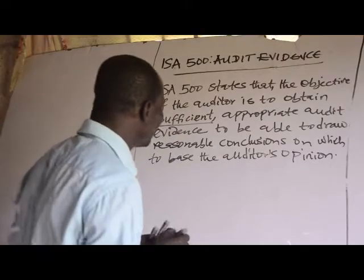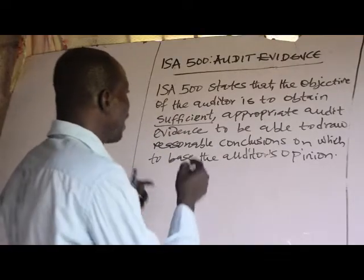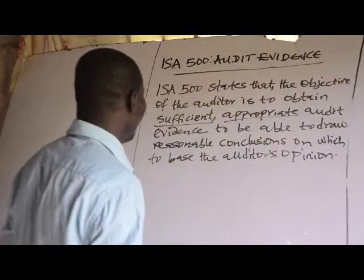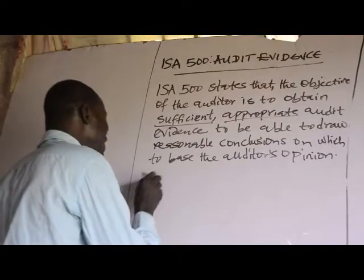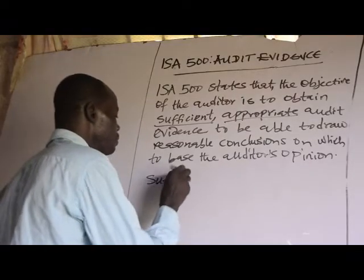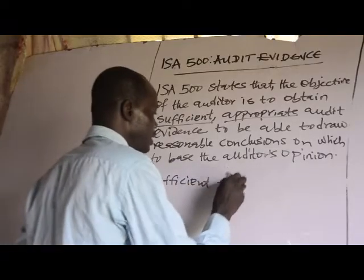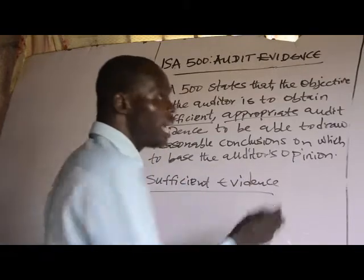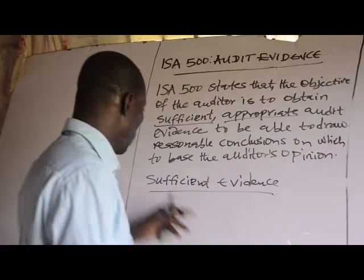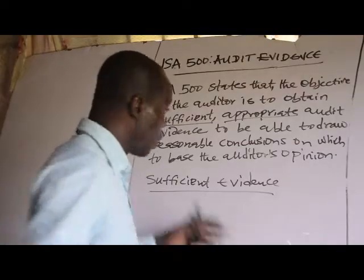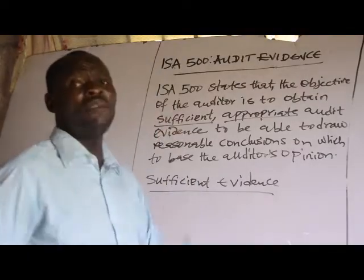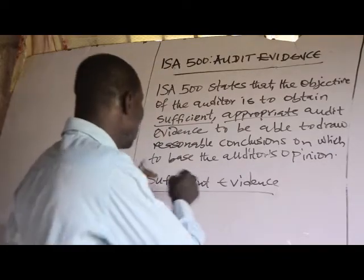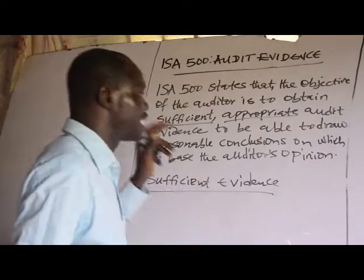What do we mean by sufficient audit evidence? Sufficient evidence relates to the quantity of evidence gathered. When something is sufficient, you are referring to the quantity. That is the meaning of sufficient evidence — it relates to the quantity of evidence gathered.